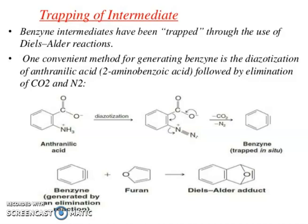When benzyne is generated by elimination and furan is present, a Diels-Alder reaction occurs forming an adduct. Here furan acts as the diene and benzyne acts as the dienophile, giving the Diels-Alder adduct product. Alkyl groups and electron releasing groups in the presence of NH₂⁻ or NH₃ can form radicals and products via an alternative mechanism.